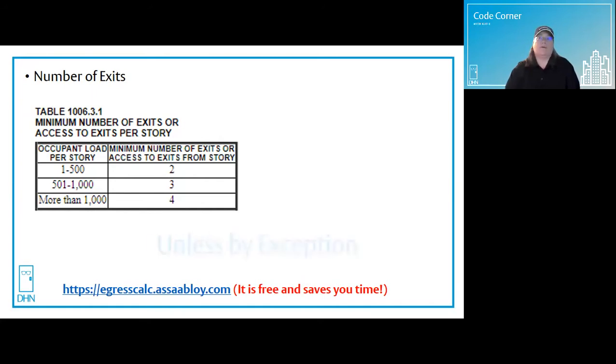But remember, the IBC is an exceptional code, and there are many, many exceptions that do allow for one exit or exit access. That will depend on the occupancy type, common path of travel, and whether the building has a full sprinkler system, among other things.